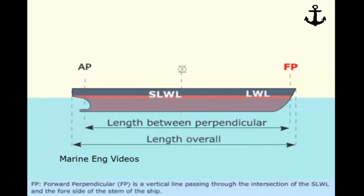Forward Perpendicular (F.P.) is a vertical line passing through the intersection of the Summer Load Waterline and the fore side of the stem of the ship.